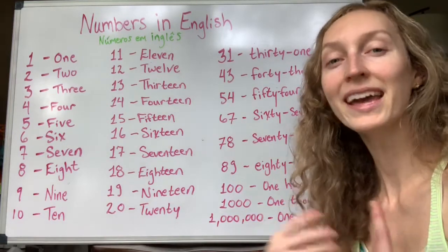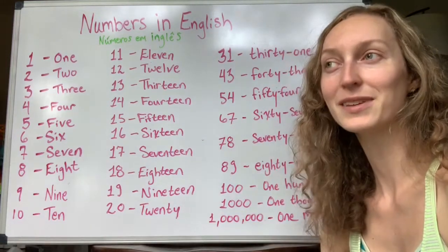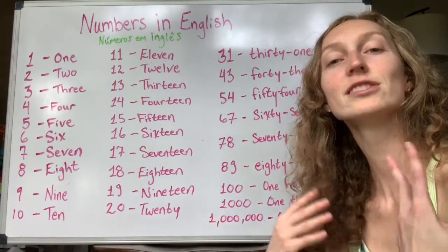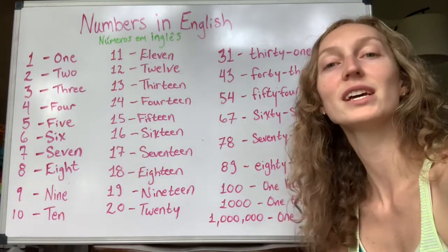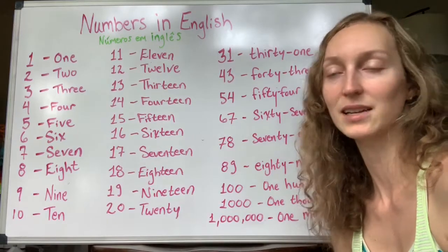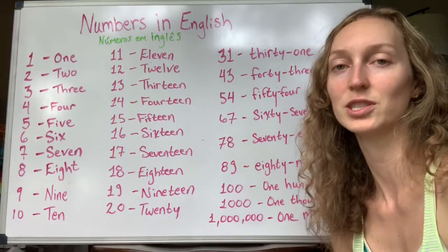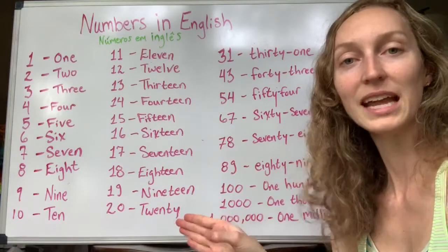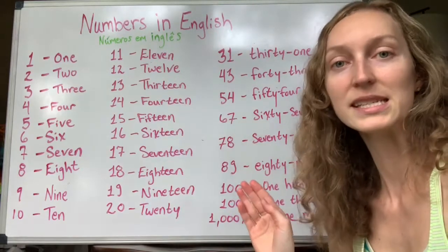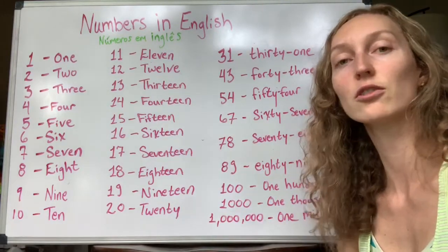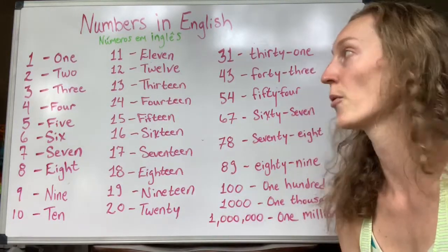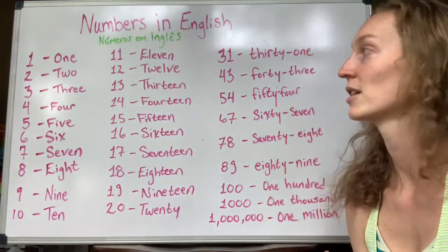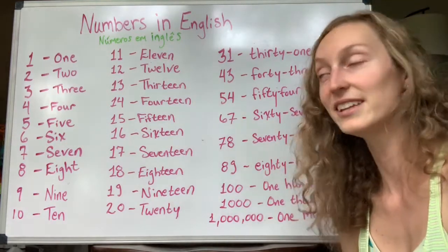A maioria de vocês provavelmente sabe — se você está realmente tentando estudar inglês, você provavelmente já sabe como contar até dez, né? Muitas pessoas sabem disso. Mas fica um pouco complicado quando você está aprendendo onze pra cima. Então eu vou repetir duas vezes com esses novos, começando com o onze, starting with eleven.